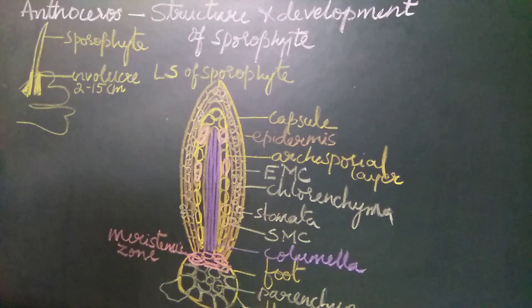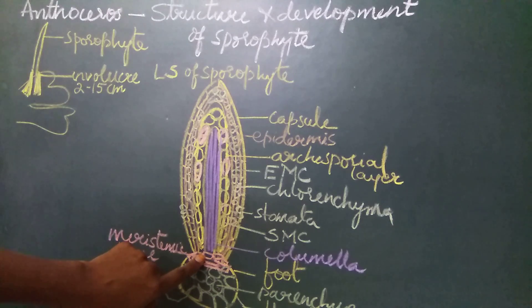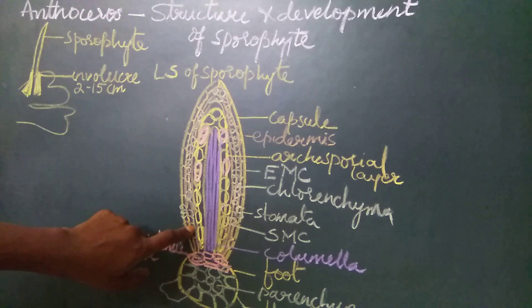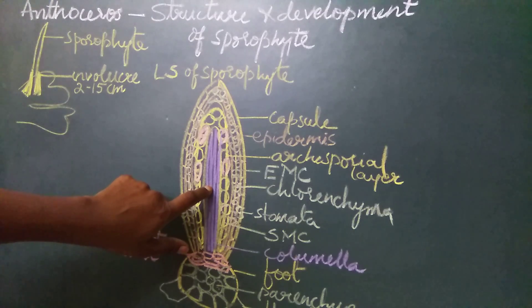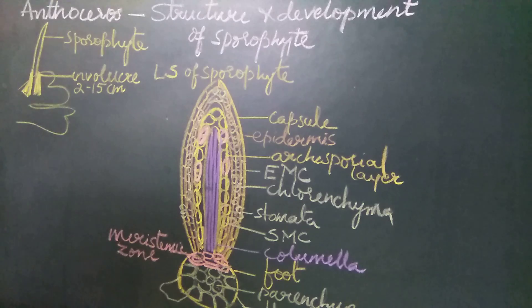This complete complex structure—the foot, the elongated capsule, the foot cells, the meristematic region, the wall layers, the archisporial tissue, and the columella—everything develops from a single cell called the zygotic cell.